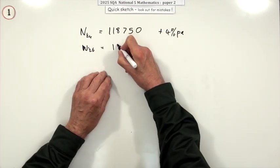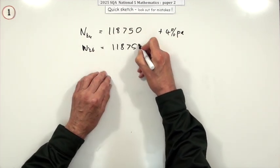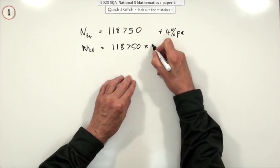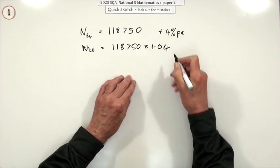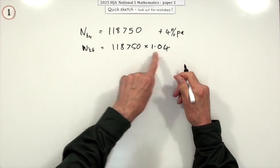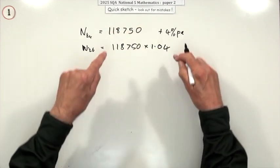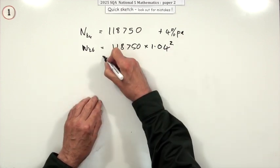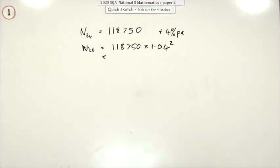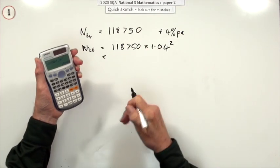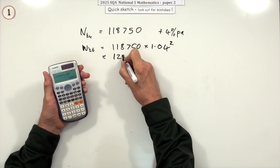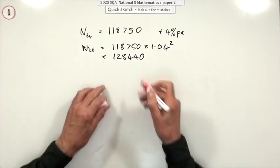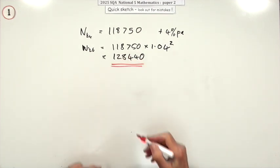Only use your calculator. So if it starts at that and it goes up 4% the best way to do that is use a factor. Multiply by 1.04 because that one keeps it the same and the 0.04 adds on the 4%. And if you're going to do the same again after that, multiply by another one which means square it. And when you press the buttons you'll get 128,440. And acquire three marks.